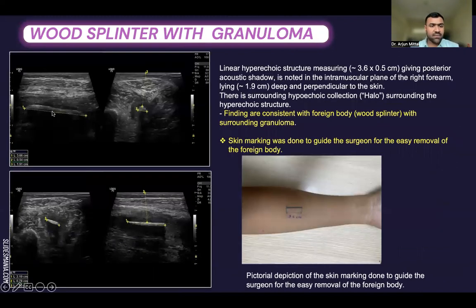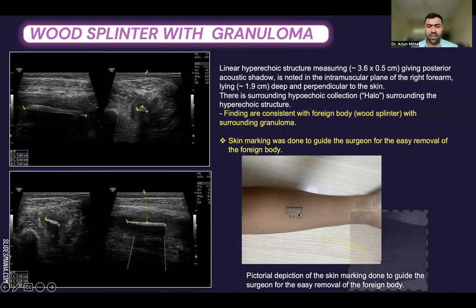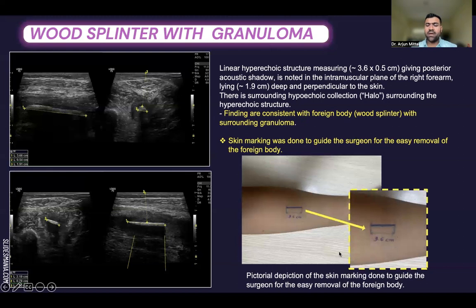In this case, we can appreciate a linear hyperechoic structure giving posterior acoustic shadow in the intermuscular plane of the right forearm, lying approximately 1.9 cm deep and perpendicular to the skin. There is surrounding hypoechoic collection giving a halo sign around the hyperechoic structure, consistent with a foreign body wood splinter with surrounding granuloma. Skin marking was done to guide the surgeon for easy removal of the foreign body, as shown in the pictorial depiction.